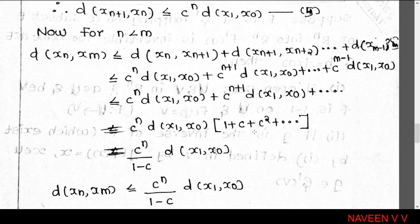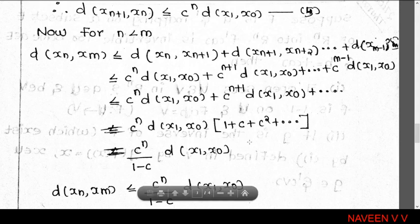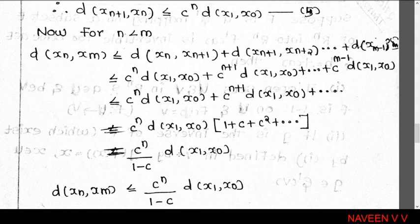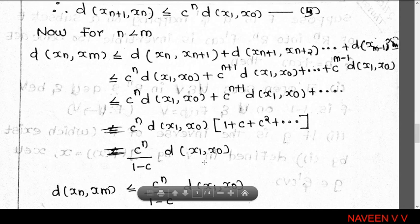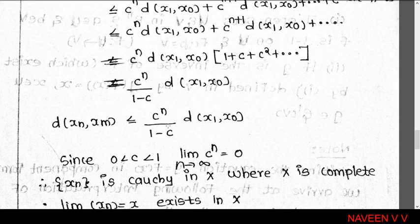The bracket (1 + c + c² + ...) is a geometric series with common ratio c. Since c belongs to the open interval (0,1), |c| < 1, the geometric series is convergent. The sum of the convergent geometric series is 1/(1-c). Therefore d(x_n, x_m) ≤ c^n / (1-c) · d(x_1, x_0).